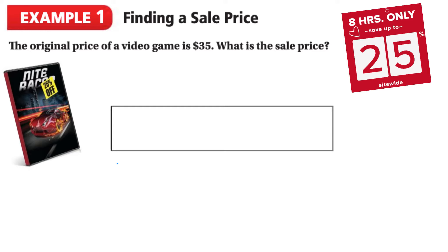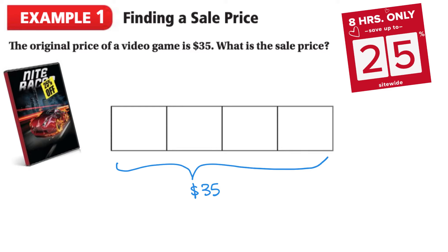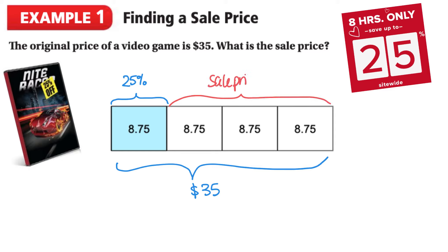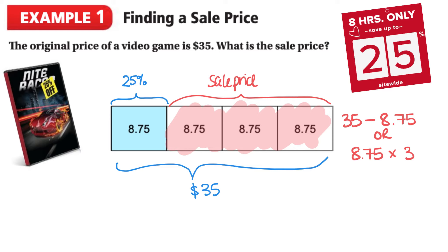If the original cost of our video game is $35 and we have 25% off, then we can divide this bar into four different parts, because 25% — hopefully we now have memorized — is equal to one quarter. Each part is $35 divided by 4, which gives us $8.75. Because we have a discount of 25% off, one section is the discount, and the sale price is the remaining sections. We can do $35 take away $8.75, or $8.75 times three — either way our sale price is $26.25.